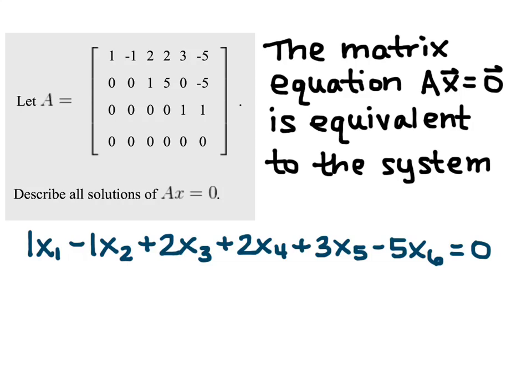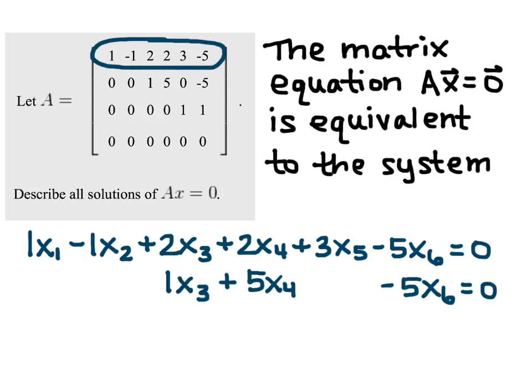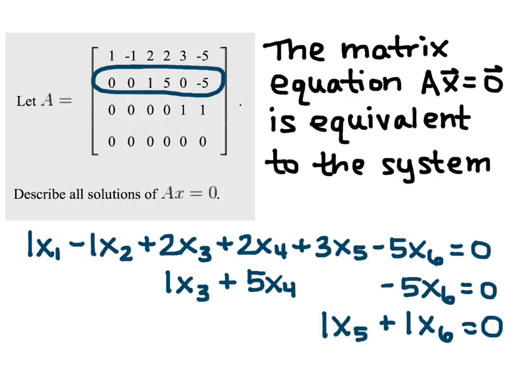Notice that the coefficients on the X's are exactly the numbers that you see in row one of A. I do this for the remaining rows, and I get 1X3 plus 5X4 minus 5X6 equals zero from the second row, and then X5 plus X6 equals zero from the third row, and then just zero equals zero from that last row.